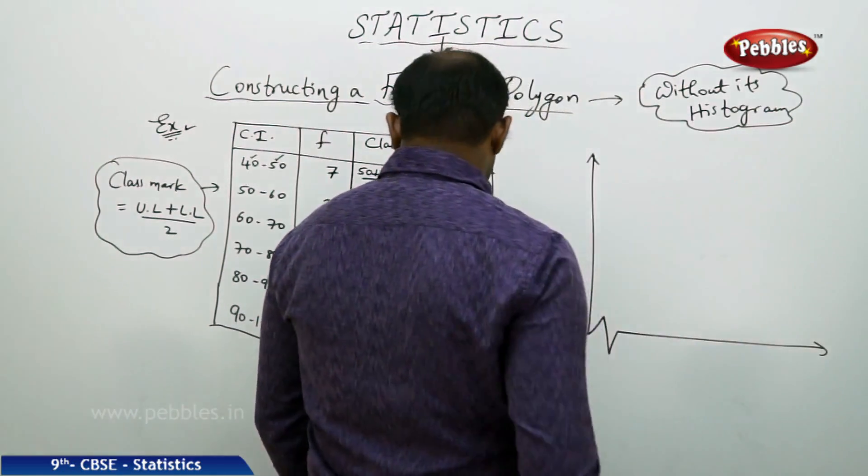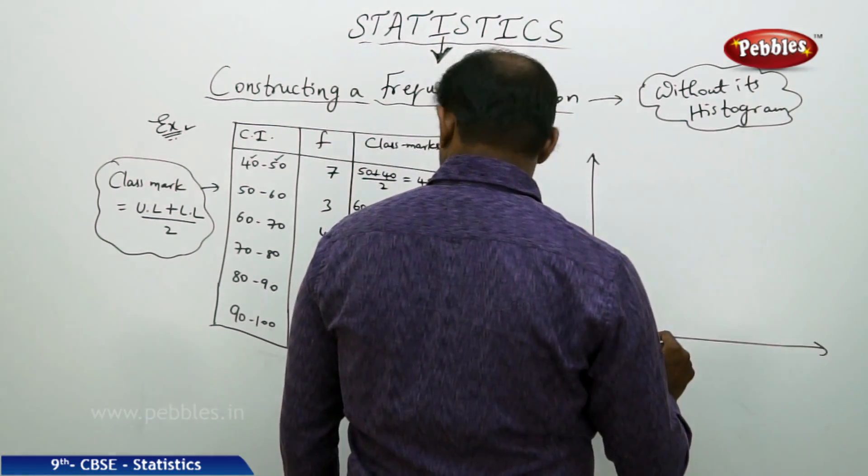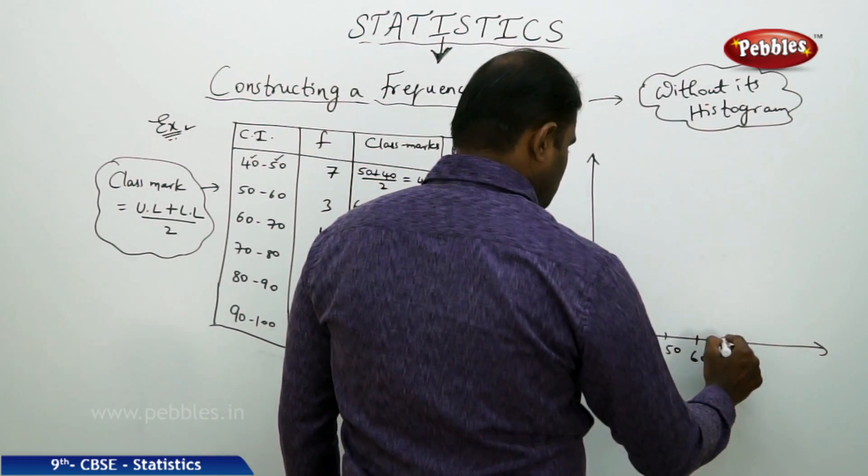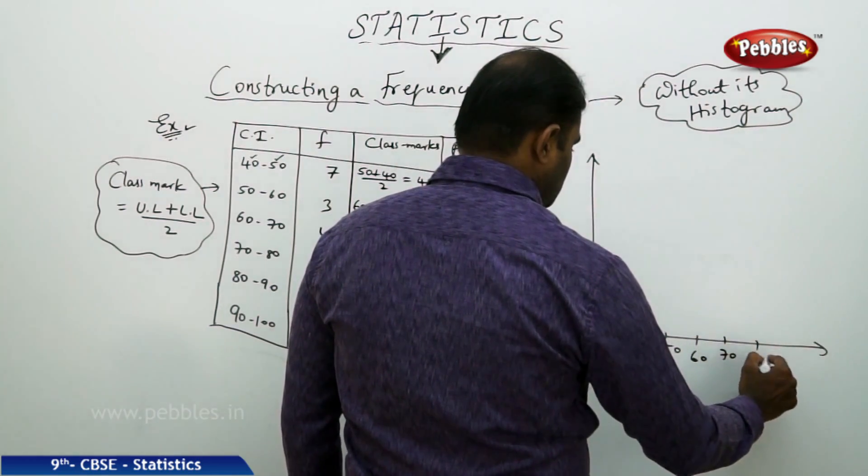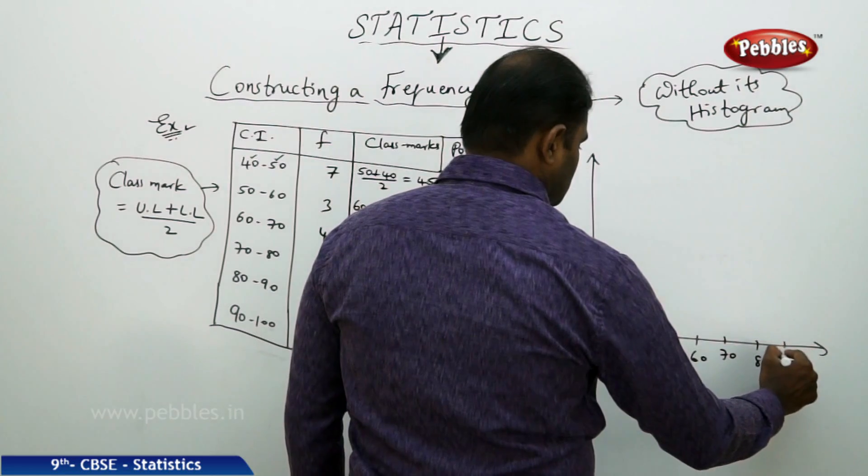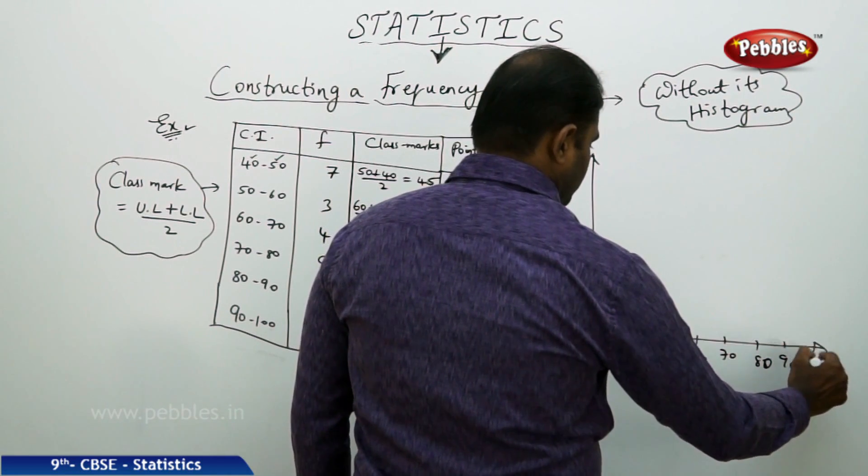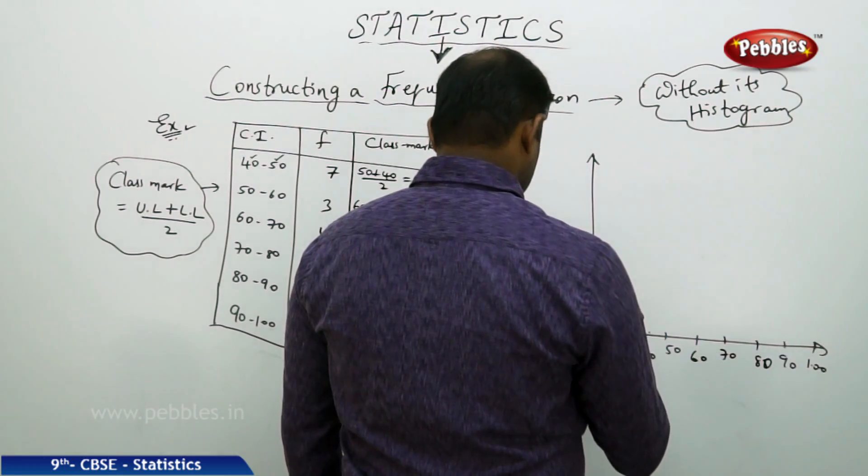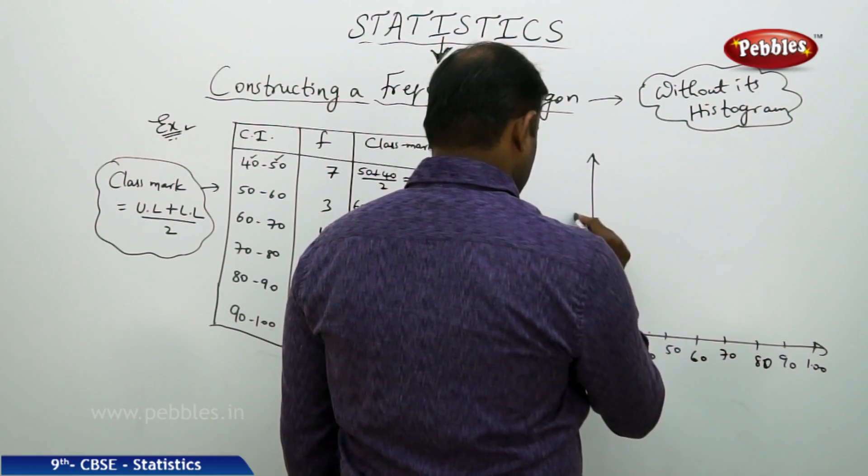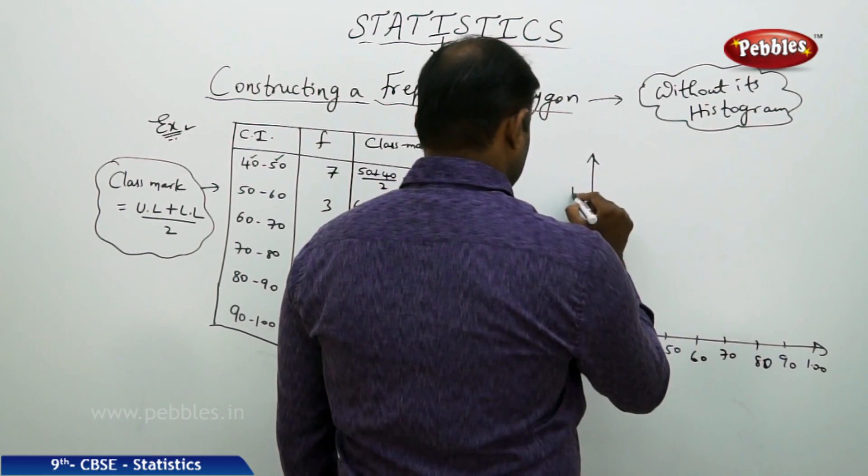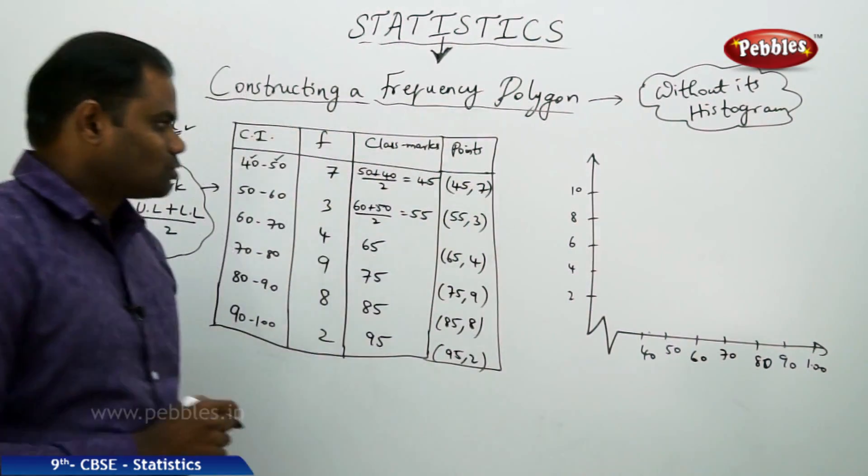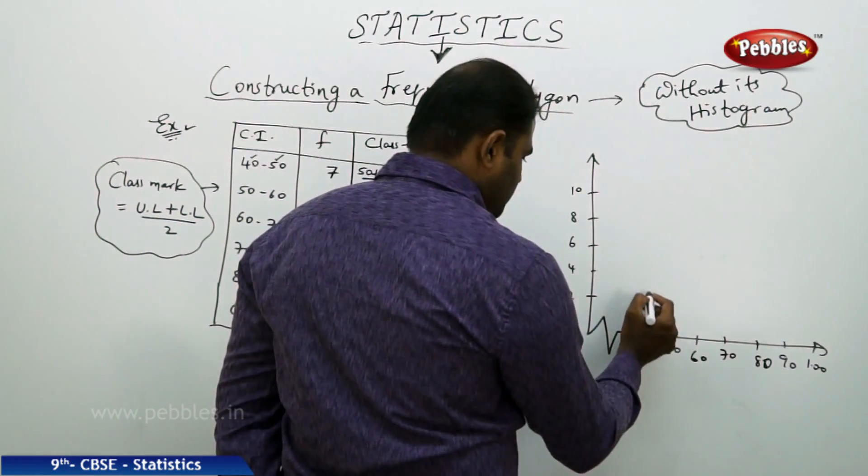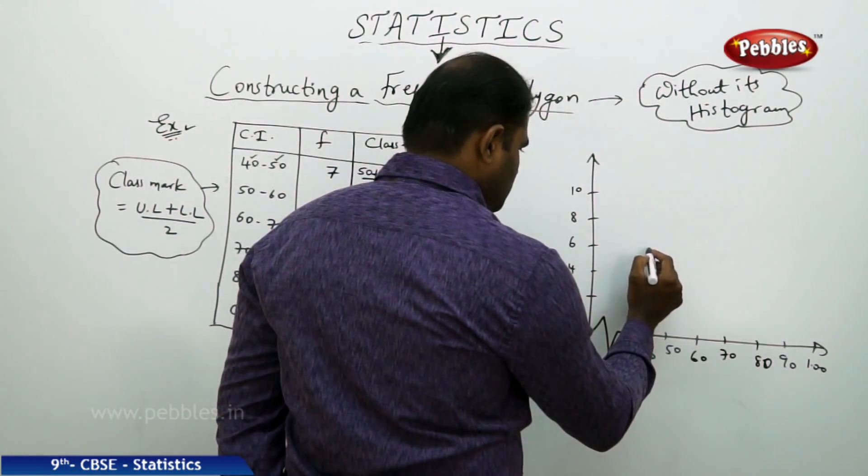So I pick the marks 50, 60, 70, 80, 100, and then 6, 8, 10 on the other axis. So the first point is 45, 7. So it lies at 45 and approximately out here.